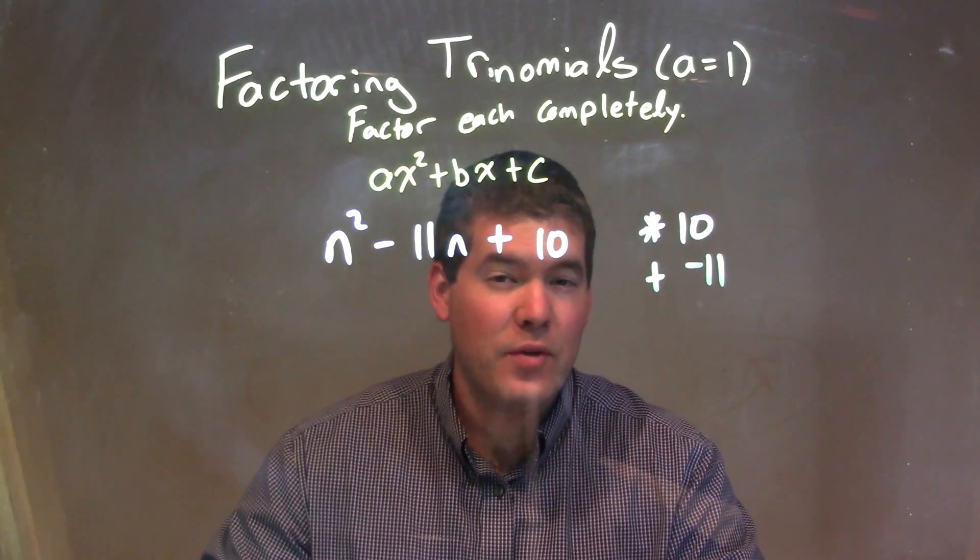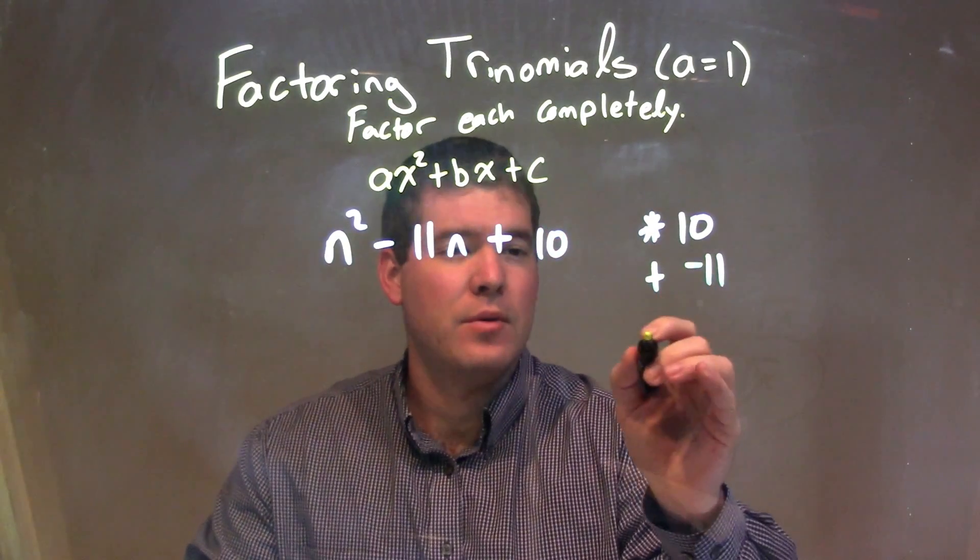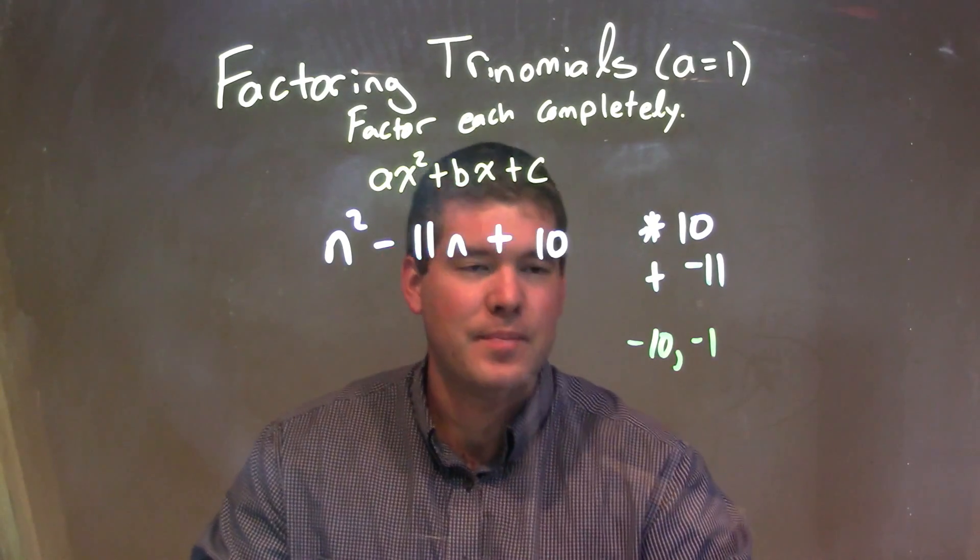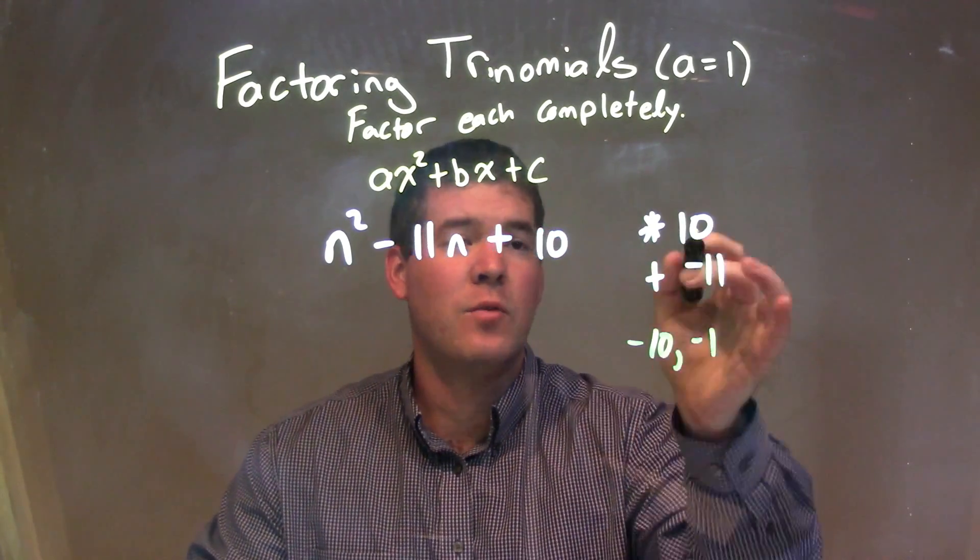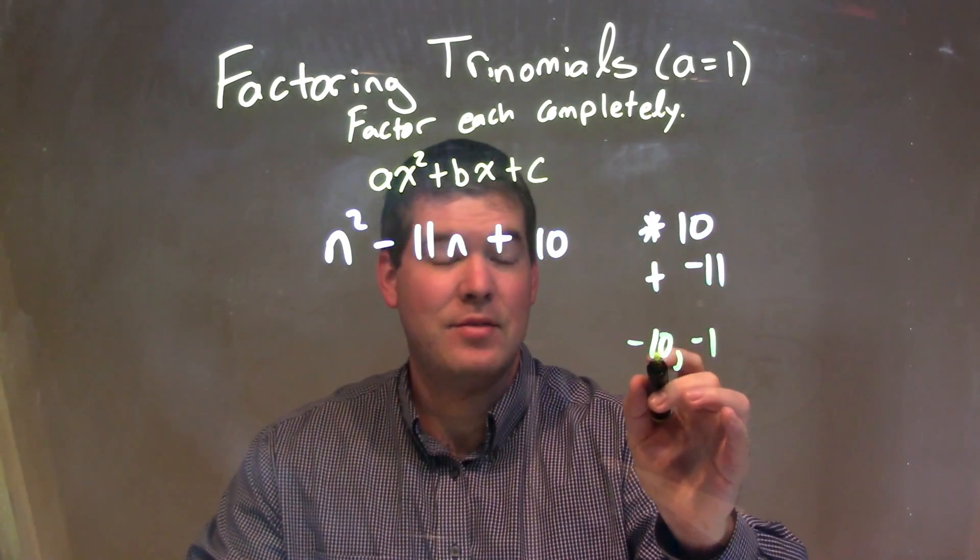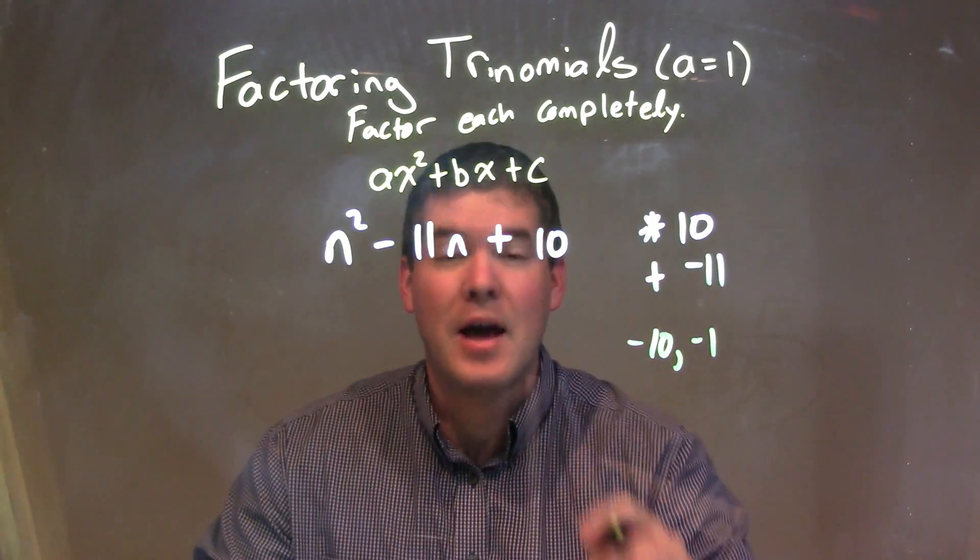Well, if you think about it, our two numbers - what about a negative 10 times a negative 1, right? Negative 10 times a negative 1 is a positive 10, but negative 10 plus a negative 1 is a negative 11.